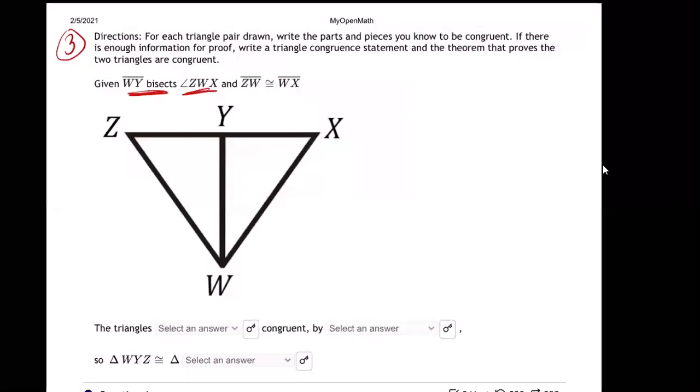WY bisects angle. See, this is an angle mark here. Angle ZWX. What's angle ZWX? It's this angle. See ZWX.